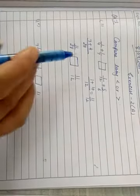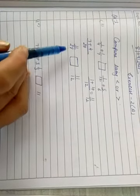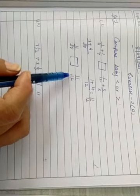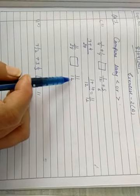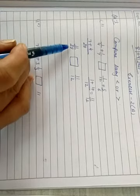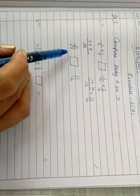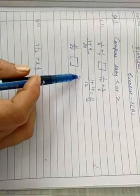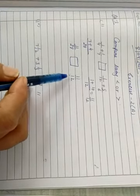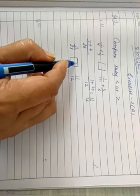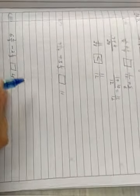11 upon 12 is greater than 11 upon 28. If numerators are same, we check the denominators. In these denominators, 12 is smaller, 28 is greater. So fractional number 11 upon 12 is greater than 11 upon 28. Clear? Now, part 4.